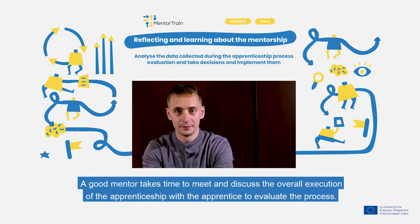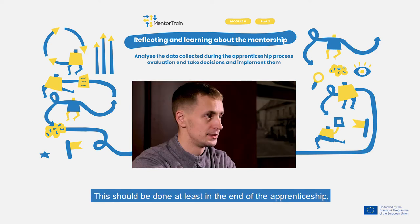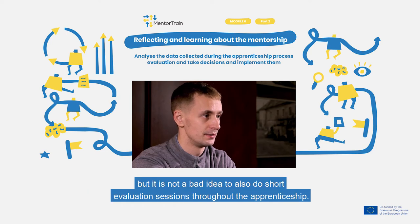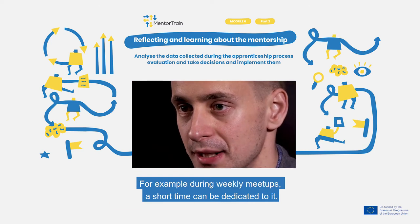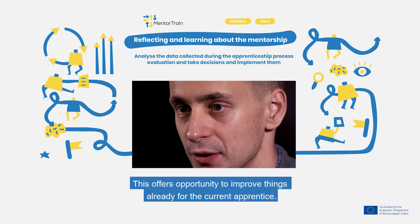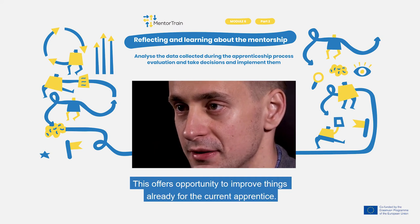A good mentor takes time to meet and discuss the overall execution of the apprenticeship with the apprentice to evaluate the process. This should be done at least once at the end of the apprenticeship, but it is not a bad idea to do short evaluation sessions throughout. For example, during weekly meetups a short time can be dedicated to it, which offers the opportunity to improve things already for the current apprentice.